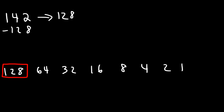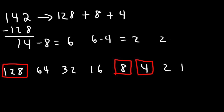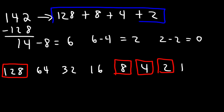If we subtract 142 by 128, that's going to give us 14. And so the next highest number just under 14 is 8. So 14 minus 8 will give us 6. Let's put the 8 here. Now the next highest number that's under 6 is 4. So if we subtract 6 by 4, that will give us 2. Let's put the 4 here. And then 2 minus 2 will give us 0. So we could stop at the 2. You can check it: 128 plus 8 plus 4 plus 2 gives you 142. So you want to find all the base 2 numbers that add up to this number.